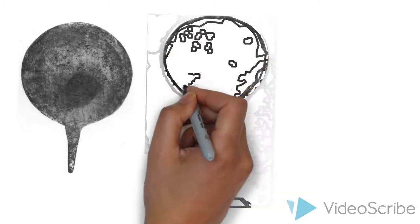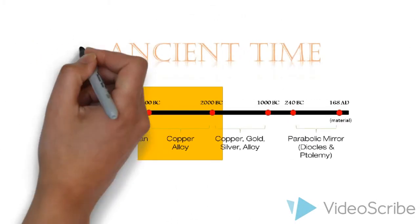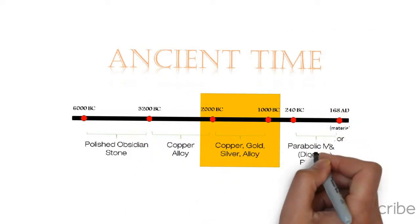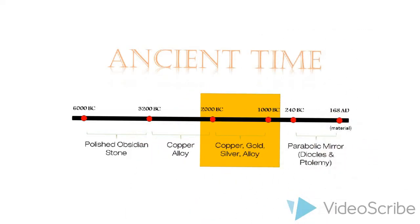Concave mirrors used to magnify objects were also manufactured. From 2000 BC onwards, mirrors were also made from other metal alloys, such as silver alloy and gold alloy, as well as electrum, a naturally occurring alloy of gold and silver.